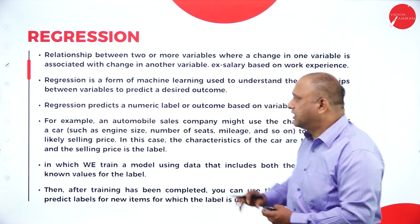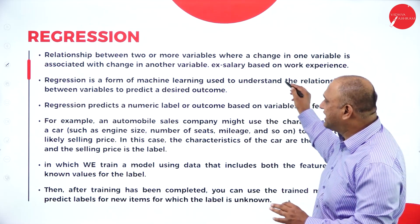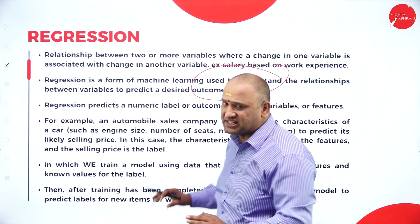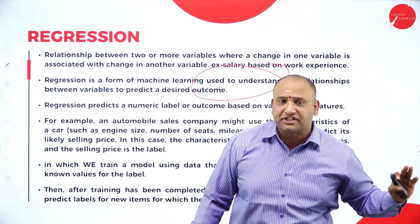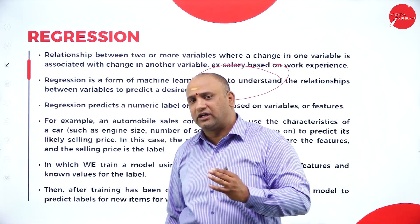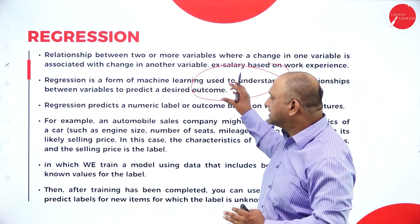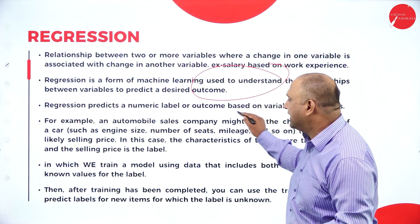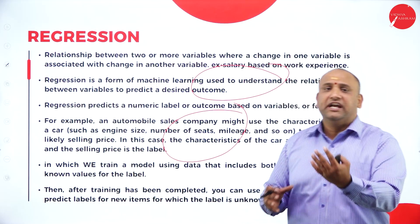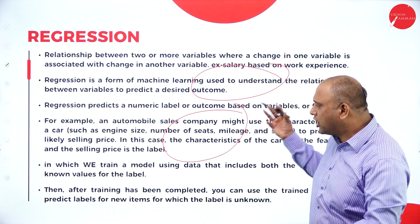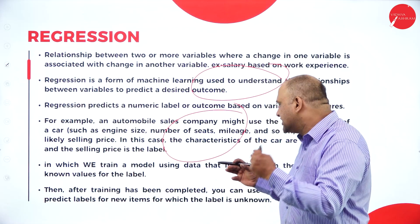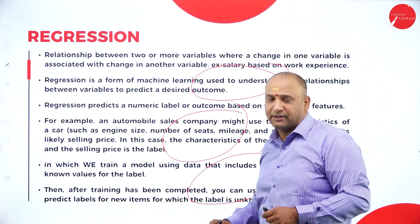In machine learning, regression is basically used to understand the relationship between variables and the desired outcome. For example, you can use a regression model to understand a student's performance — his performance versus the test outcome, or hard work versus the output. You can even use it in an automobile sales company to understand sales versus performance or brand value versus performance. Regression includes features of both the values of the label.